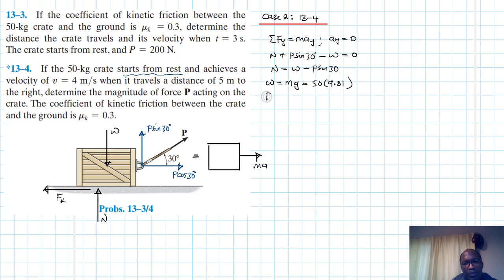And our P is unknown. We don't know P. So our N is just going to be equal to 50 by 9.81, which is 490.5 minus 0.5P.